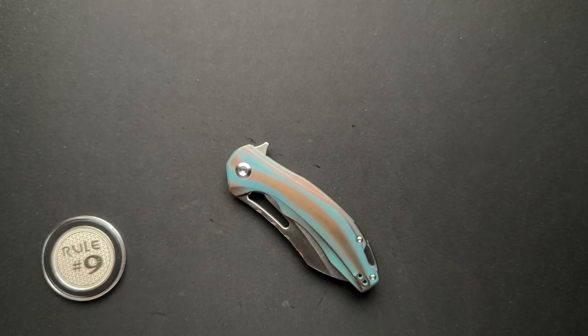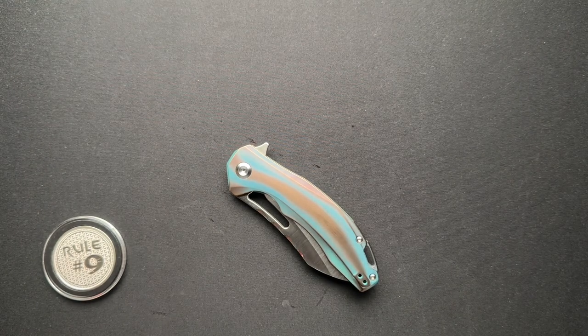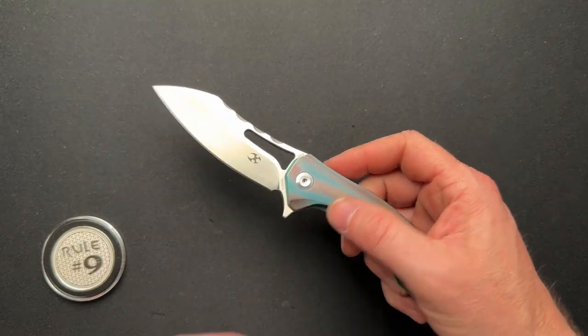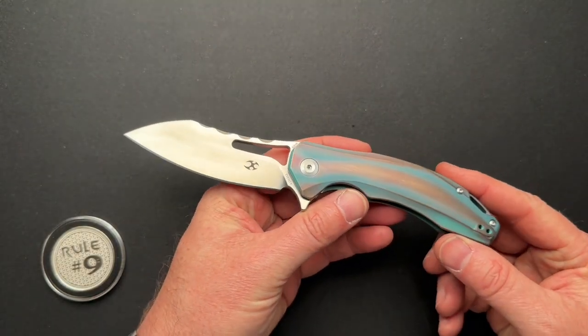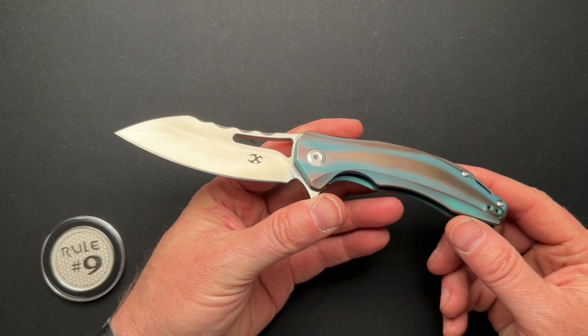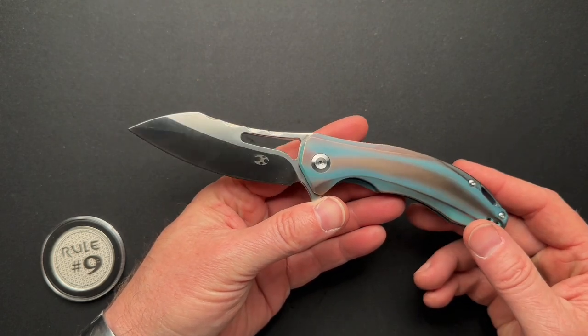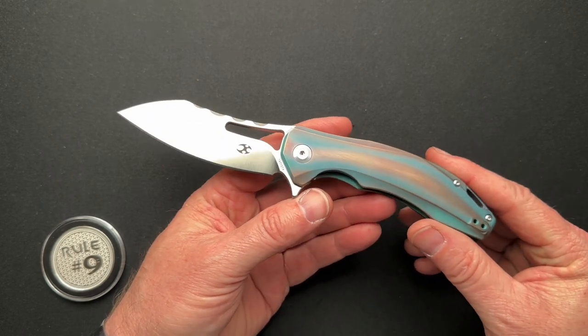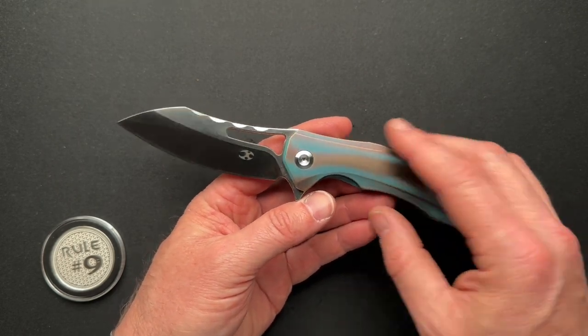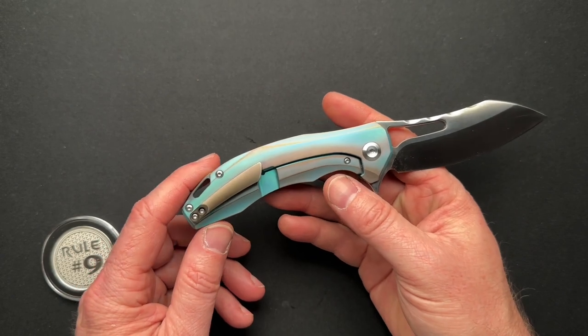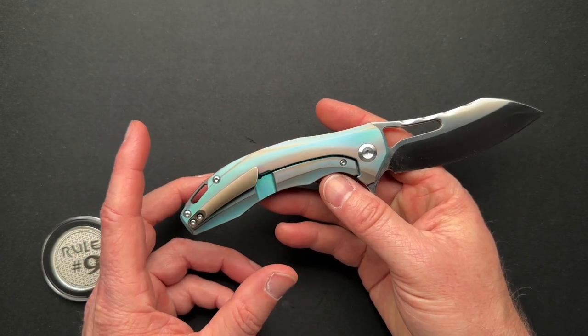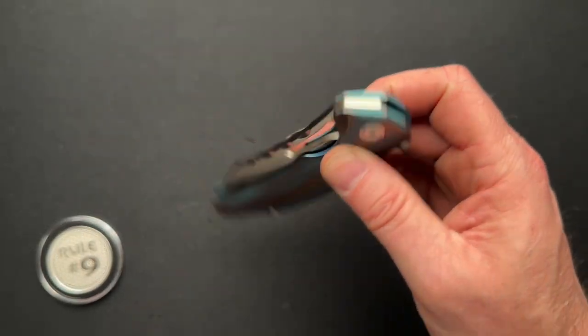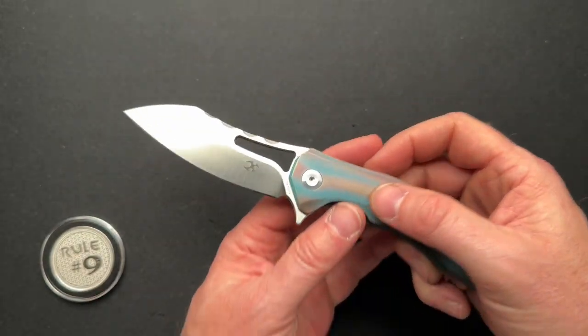We're not going to really harp on price, but it does play into our buying decisions, I think. This is a cool model. I have not seen one online with this anodized treatment here, so I don't know if Alice did this separate or I'm not sure. Because the ones I found online were just plain titanium scales.